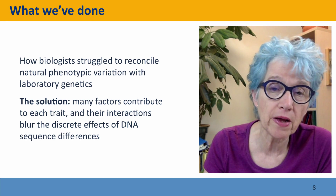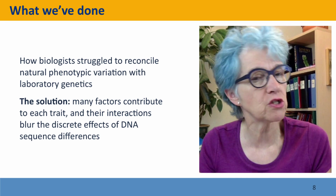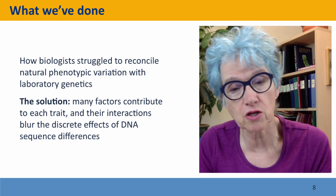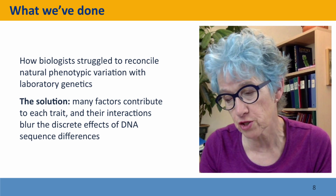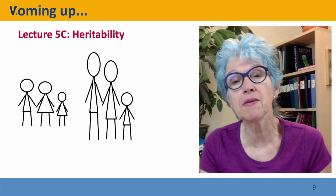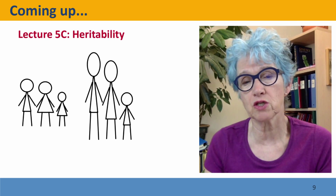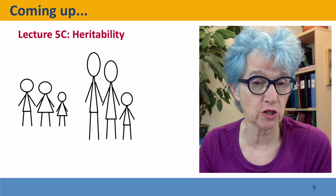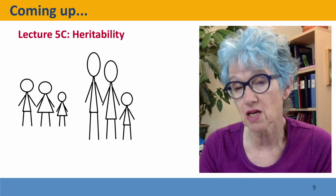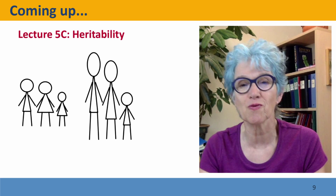So we've discussed how biologists struggled to reconcile natural phenotypic variation with laboratory genetics — on one hand solid observations of populations, on the other beautiful laboratory science. The solution: many factors are contributing, and their interactions blur the discrete differences so that we get smoothly varying phenotypes from discrete DNA sequence differences. Coming up next, before we can think about how genetic differences cause phenotypic differences, we have to address heritability — how much of the phenotypic differences we see is actually due to DNA sequences, versus environmental effects and chance. We'll talk about that in the next lecture.